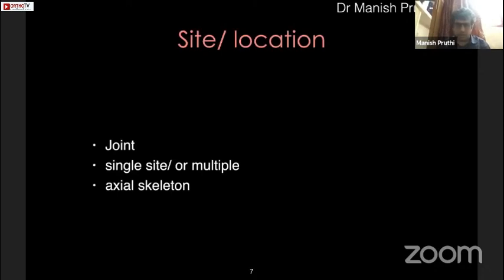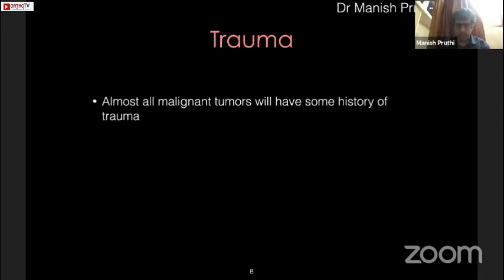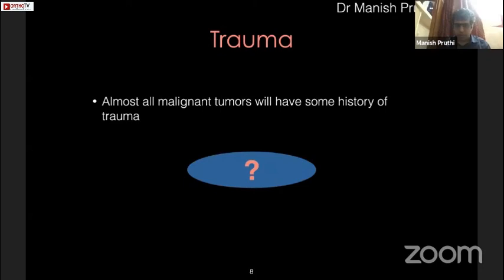The first most important factor is the site or location. We need to see whether a joint is involved or not, whether it is a single site or multiple sites, and whether the lesion is in the axial skeleton, because as Dr. Kapoor mentioned, there are some tumors which have a predilection for the axial skeleton. Regarding history of trauma: almost all malignant tumors we see will give some history of trauma, so the relevance of trauma history matters.